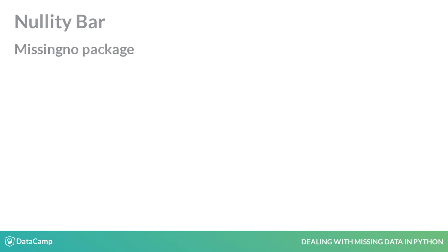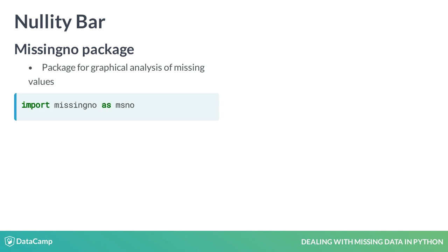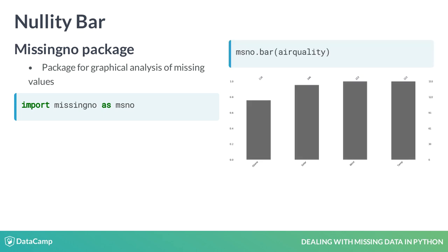For a better understanding, let us now graphically visualize the amount of missing values using the missingno package. The missingno package is a library that provides functions for graphical analysis of missing data. We import the package missingno as msno and use the function msno.bar on air_quality to visualize the completeness of the dataframe.